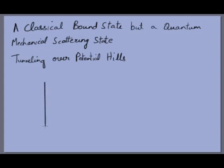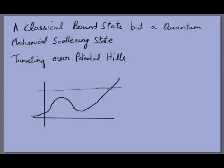Consider a potential that goes to zero on one side but to infinity on the other. If we give an energy E large enough to pass over the hill, it would be a scattering state even classically — the particle passes the hill, reaches a point where kinetic energy becomes zero, goes back, and escapes. But what if the energy is smaller than the potential hill and the particle is left on the inner side? According to classical mechanics, the particle will move to and fro between two points and it will be a bound state.